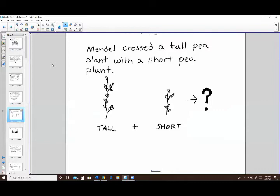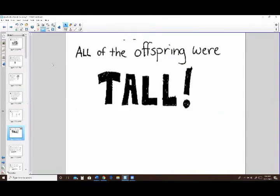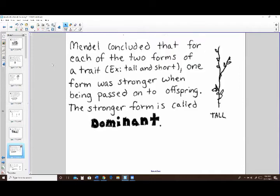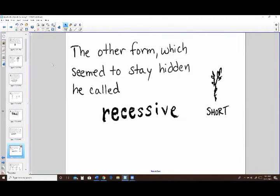He was expecting maybe a mix of plants, some tall, some short, or maybe some would be medium because that might happen. But when he did that cross, all of the offspring ended up being tall, which was really weird. Not what he was expecting. So Mendel said that that tall trait had to have like taken over or something in the pea plant. So he said that the stronger trait, the one that showed up, was dominant, and the one that was hidden, so short, the one that went away, he said was recessive.